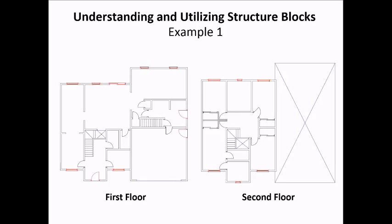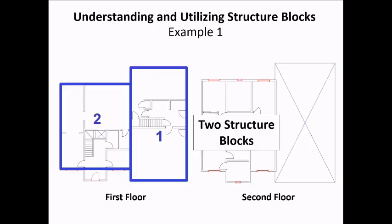For example, this two-story house is only one story where the garage is located, but is two stories where the main structure occurs. To model this structure, it would be appropriate to utilize two structure blocks: one specified as two stories for the main structure and one specified as one story for the garage area.